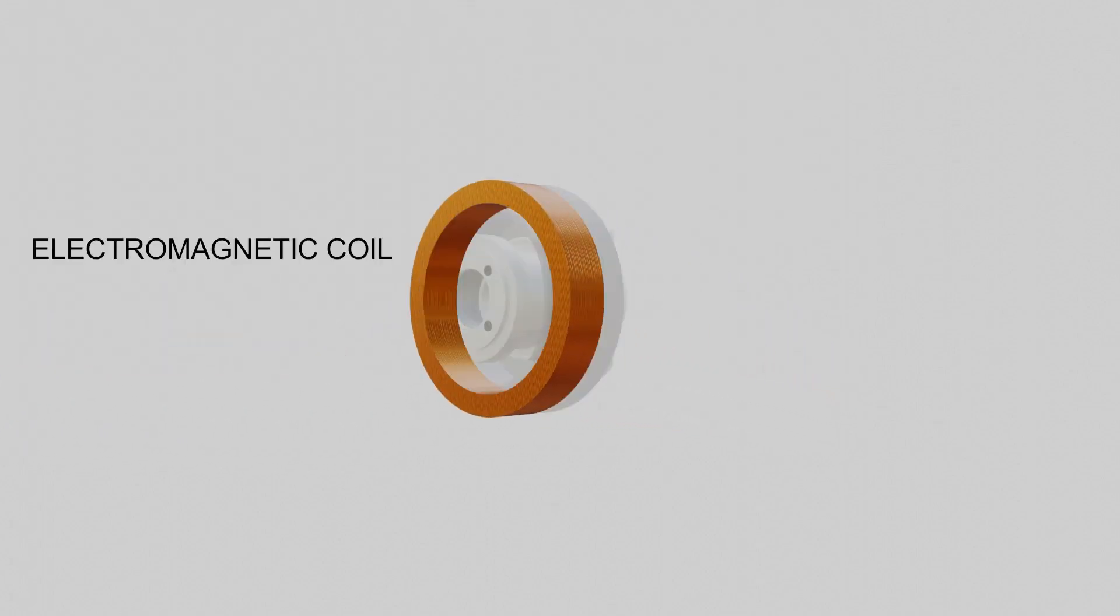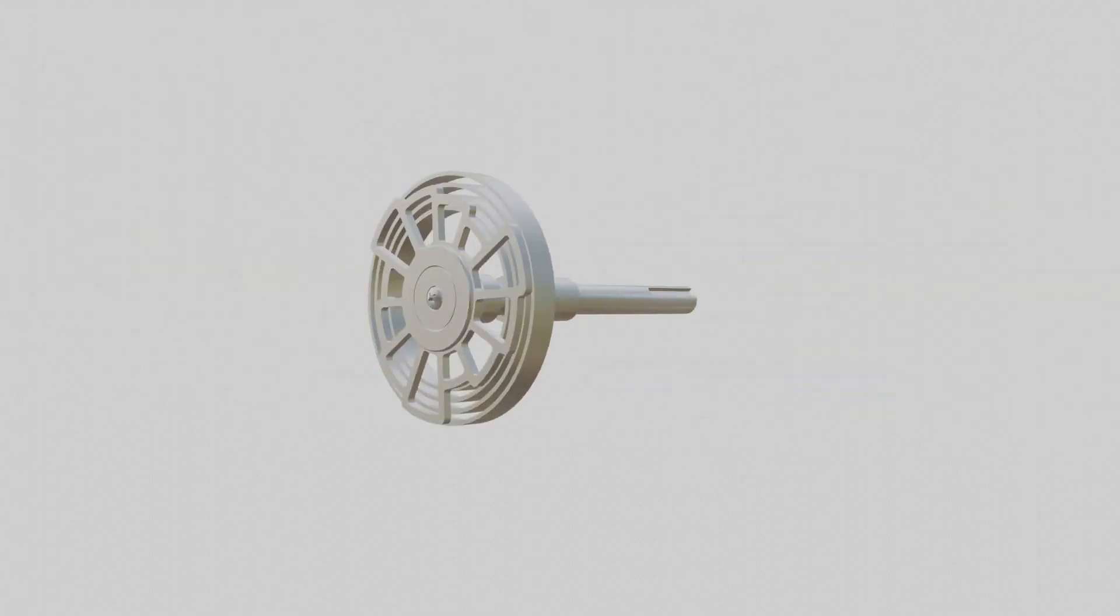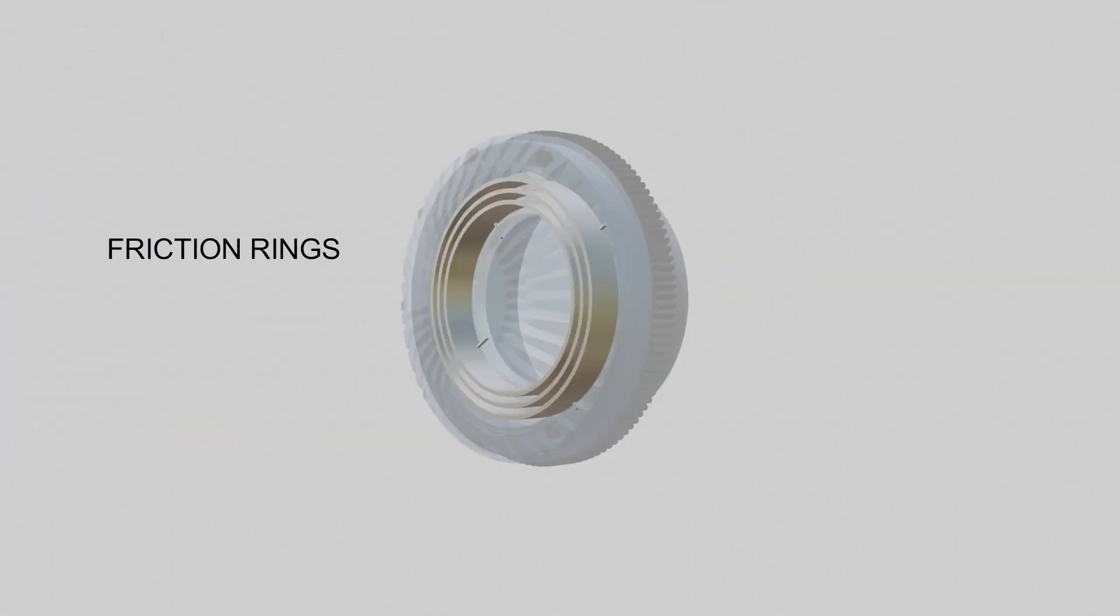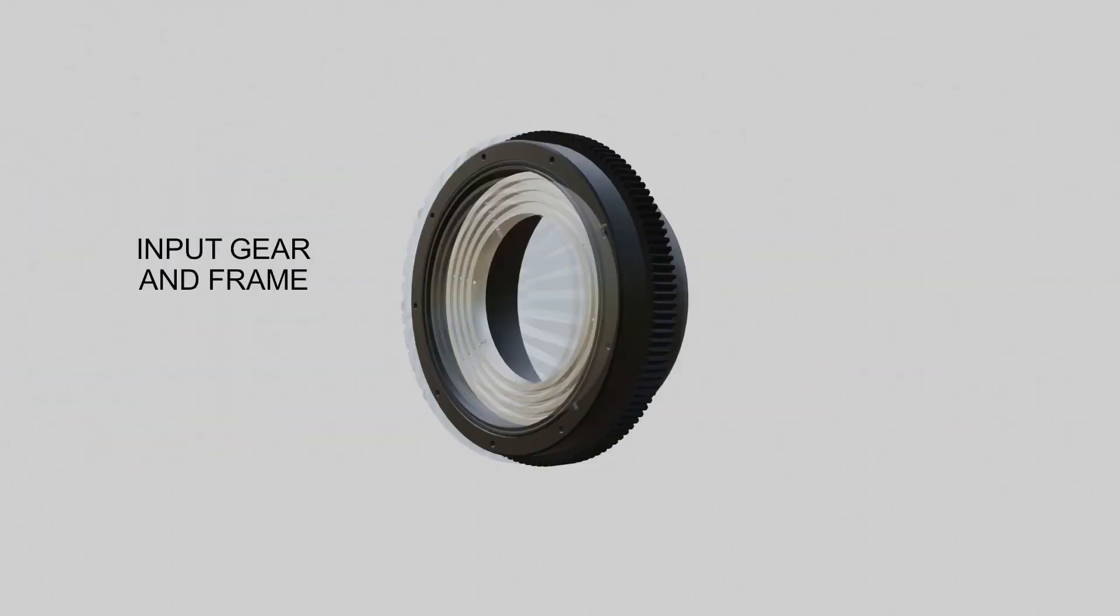The coil holder contains an electromagnetic coil and a set of bearings. The output contains a set of friction rings and the output shaft. The input contains a set of friction rings and the input gear.